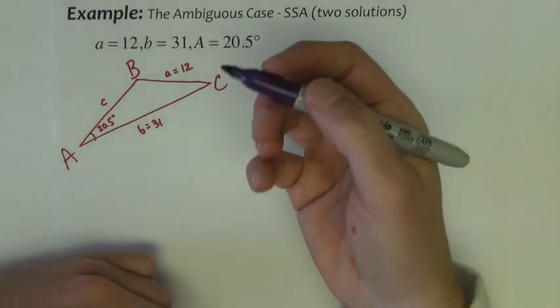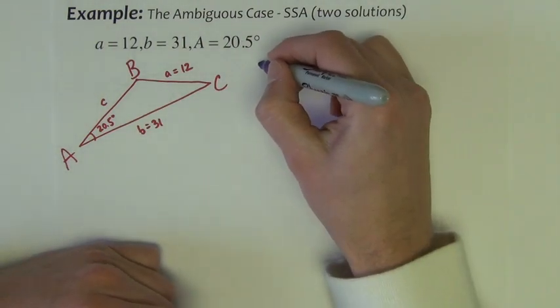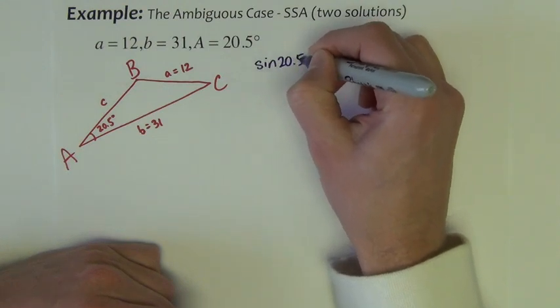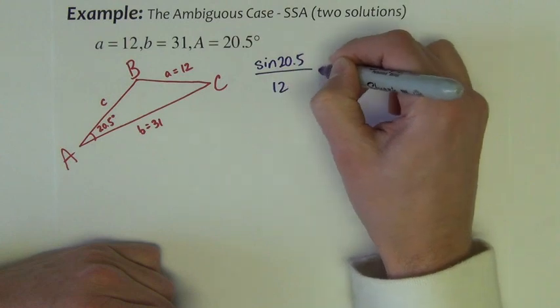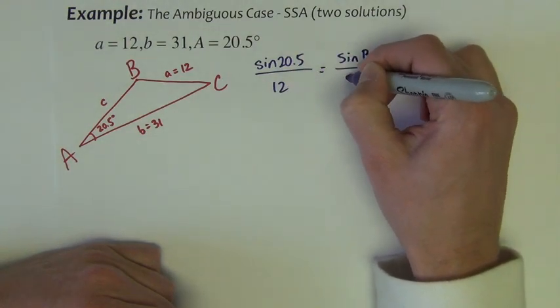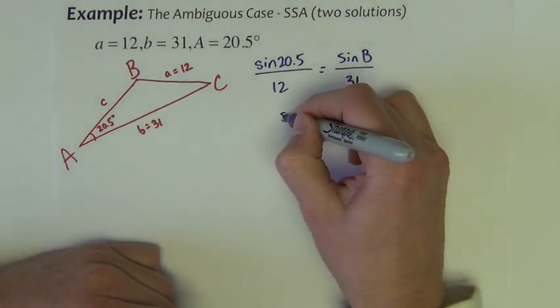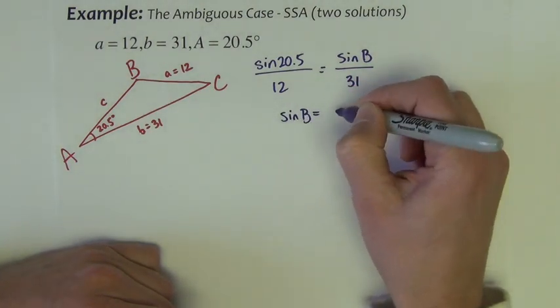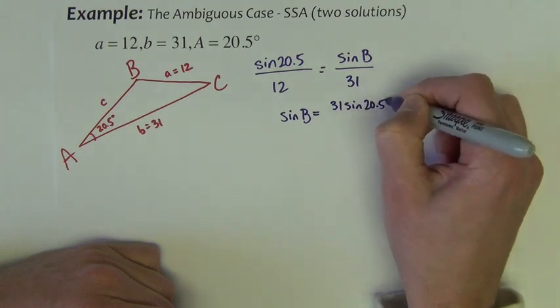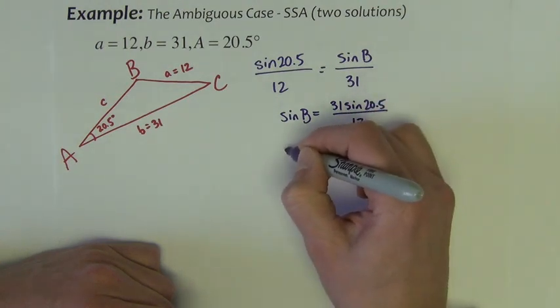I begin by finding angle B. So we're going to set the sine of A over a is equal to the sine of B over b. So sine of B is equal to 31 sine of 20.5 over 12.